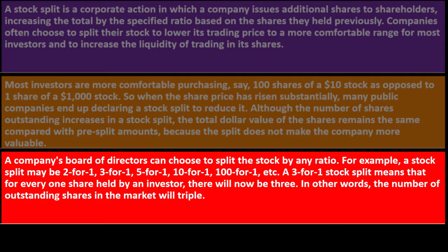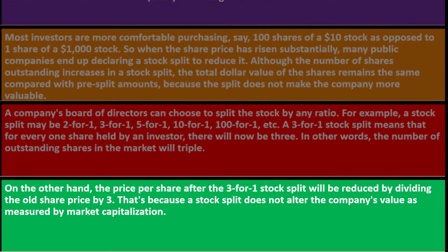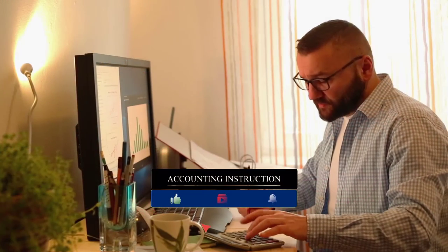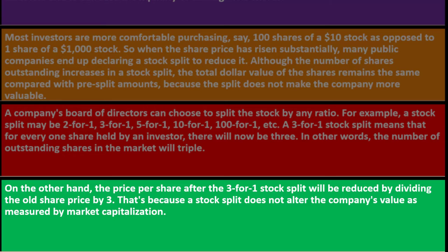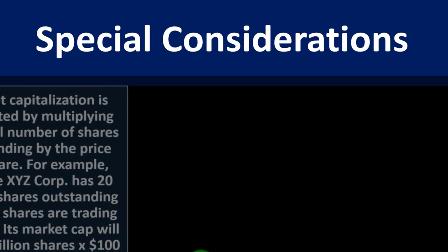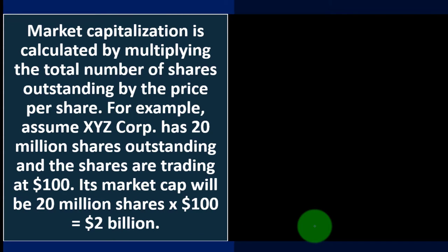A company's board of directors can split the stock by any ratio — for example, two-for-one, three-for-one, five-for-one, ten-for-one, or one hundred-for-one. A three-for-one stock split means for every one share held by an investor there will now be three, so shares outstanding triple. The price per share after the three-for-one split is reduced by dividing the old share price by three. As an individual investor, you are theoretically left in the same financial position because the stock split does not alter the company's value as measured by market capitalization.